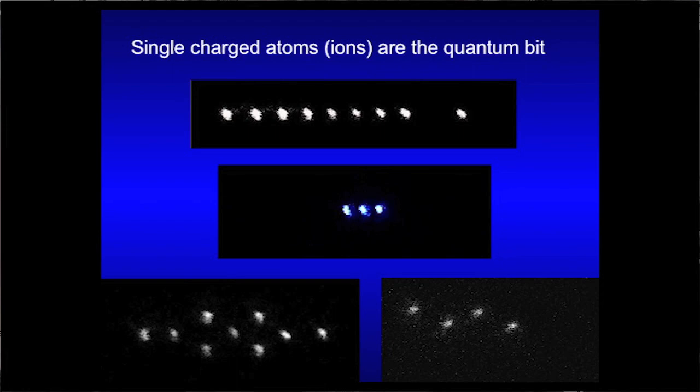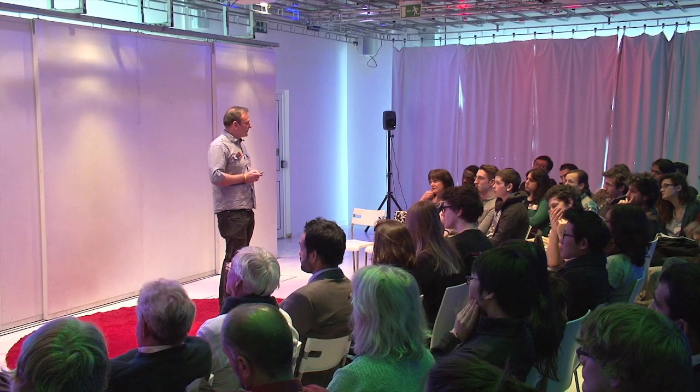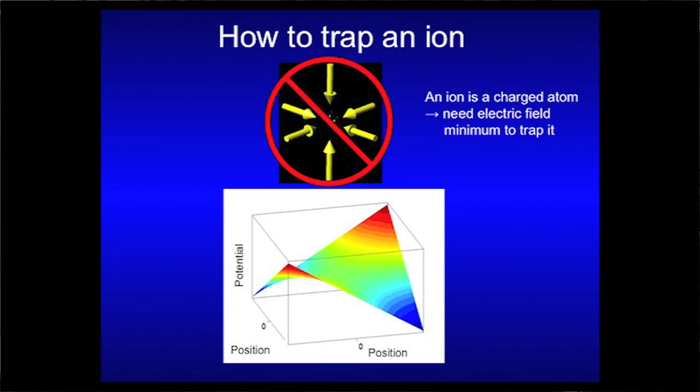We can actually hold these atoms, and I'm going to show you in a second how we're actually doing it. So, the best thing would be have some kind of fields, electric fields, because we have an ion, so an ion is a charged atom, which holds the ion in place. But there's a physics law which can't do. You can't have that kind of field potential. So, instead we're having something like this. Some kind of strange oscillating potential.